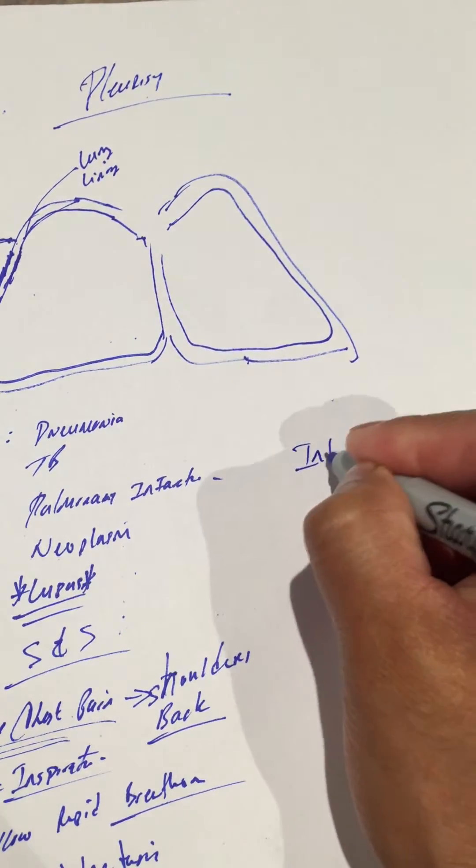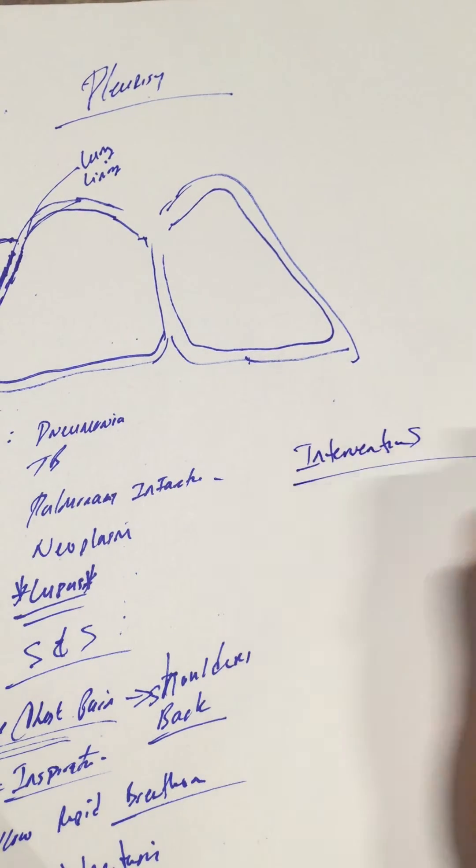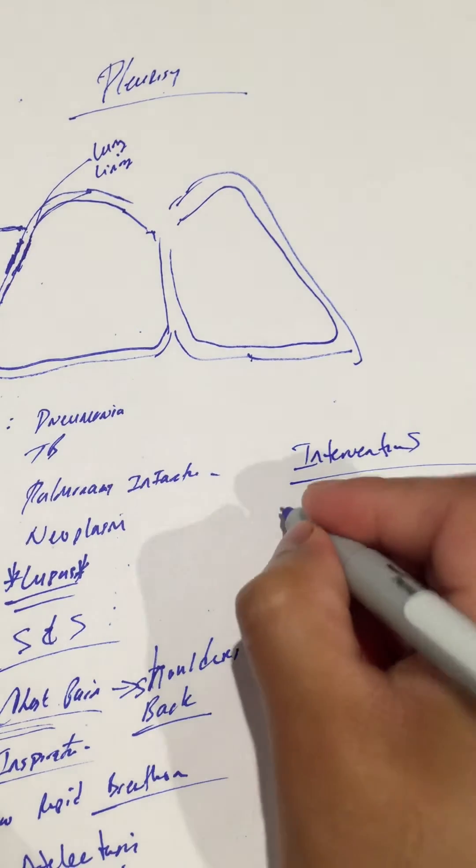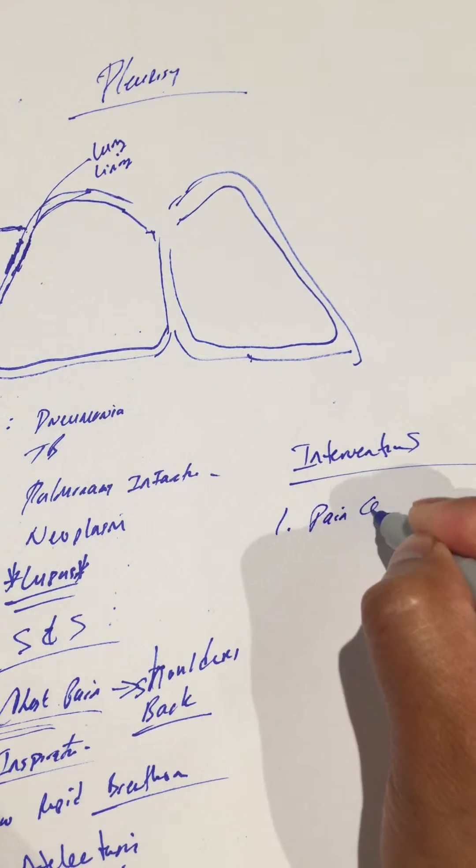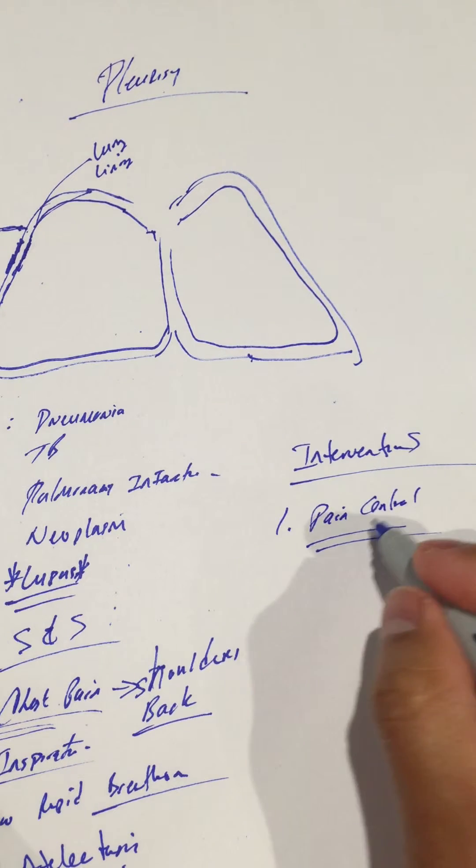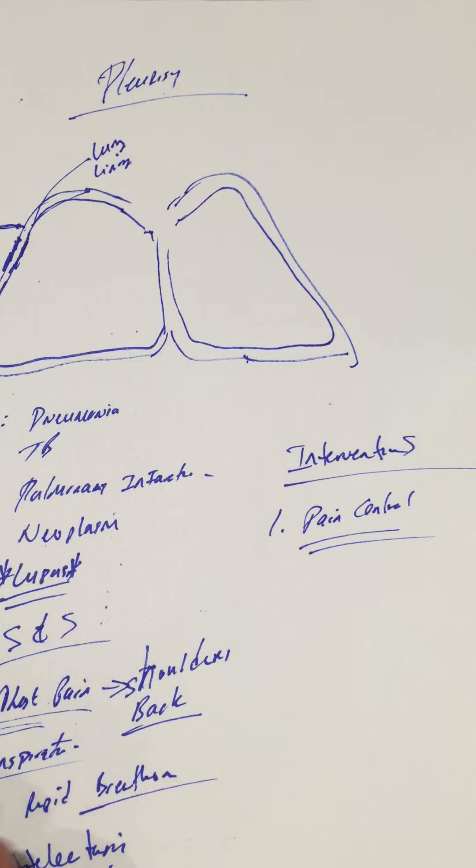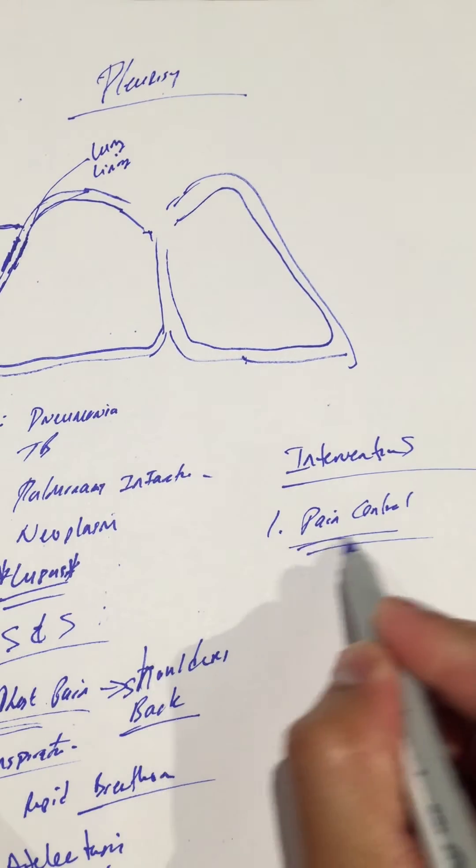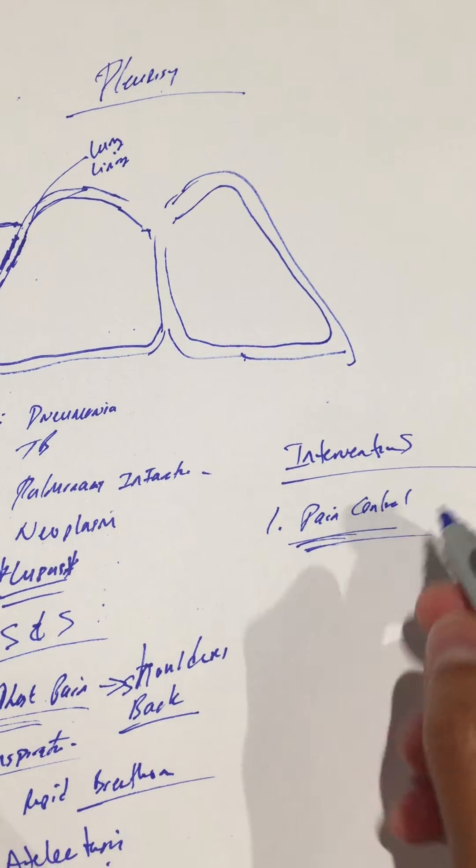So what are some interventions for these patients? Number one, adequate pain control. This will depend on the physician, what he orders, whether it's PO or IV. So make sure you give adequate pain control, control that pain. Because again, anytime the patient breathes, anytime there's any type of chest movement, it's going to cause severe pain. If your patient is having a lot of pain, it's going to make it very difficult for them to take a deep breath in, which again makes it very likely for them to get pneumonia or atelectasis. So please control that pain very well.